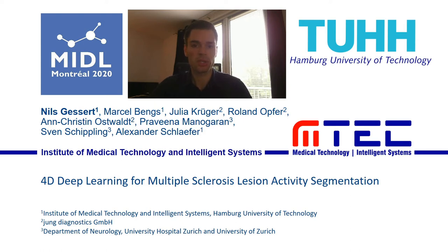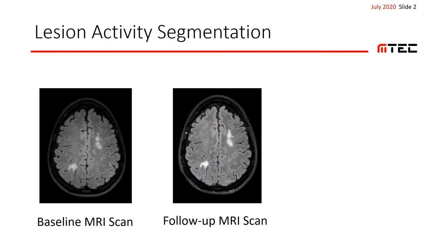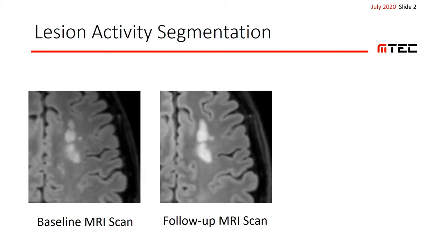I will start off with a short introduction on lesion activity segmentation, which is quite different than normal lesion segmentation. Multiple sclerosis, in short MS, is characterized by lesions in the central nervous system. For monitoring disease progression, we usually take two MRI scans acquired a few months apart and check how lesions have changed over time. If we zoom in, we can observe that the lower lesions stayed the same, while the upper lesion appears to have grown in size over time.